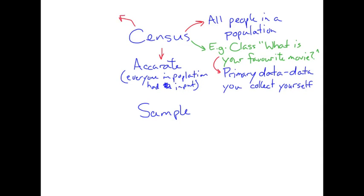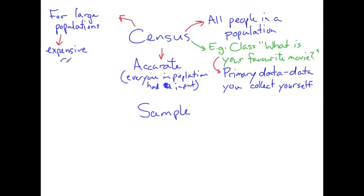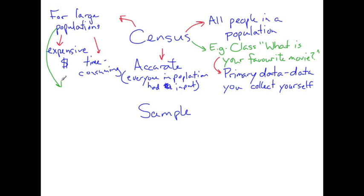However, for very large populations, a census survey is very expensive — it costs lots of money — and a census survey is very time consuming. For example, if we think of every person in Canada, according to Statistics Canada in 2012, the population in Canada was 34,880,500. So imagine how much time and money it would take to survey every person in Canada.